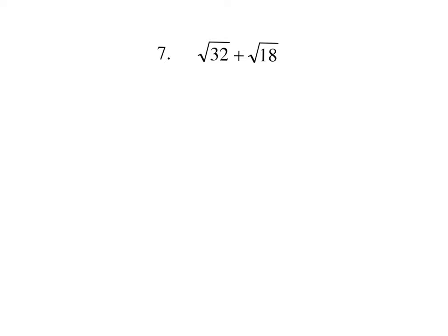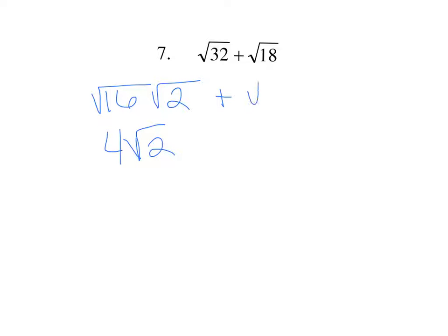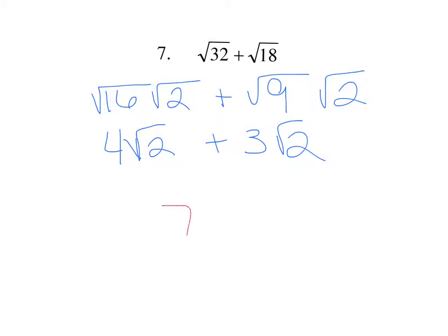Number 7 is the same situation where it doesn't look like they're like radicals but they need to be simplified first. The 32 is 16 times 2, which simplifies to 4 square root of 2. The 18 is 9 times 2, which simplifies to 3 square root of 2. They are like radicals — both have square root of 2 — so we add the coefficients: 4 plus 3 makes 7 square root of 2.